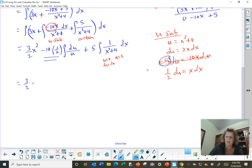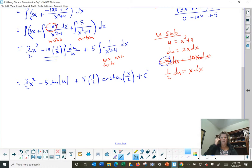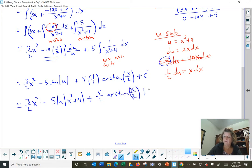Let's finish this up. 3 halves x squared minus 5 natural log absolute value of u. If you want, go ahead and replace u right now. Plus 5, 1 over a, that's a 1 over 2, arctan of u over a. u was x, a was 2. And then we need to go our plus c. A little bit final cleanup. 3 halves x squared minus 5. Let's replace u with x squared plus 4. Natural log of x squared plus 4, plus 5 halves arctan x over 2 plus c. Three different styles of integration in that one little problem.